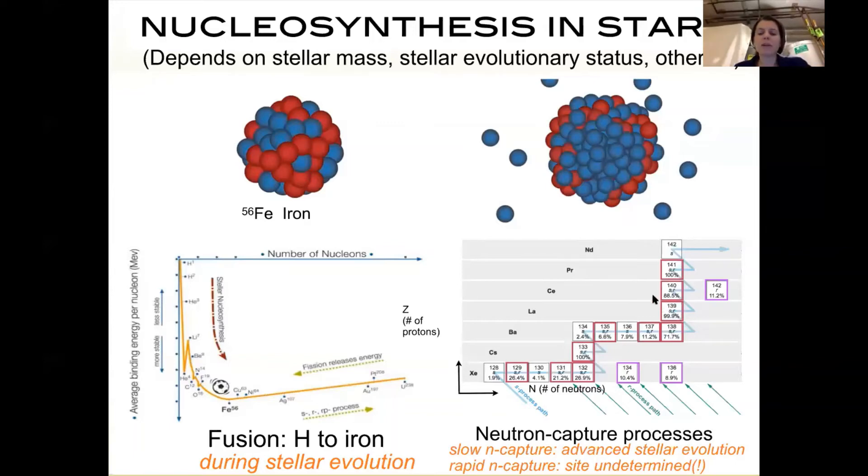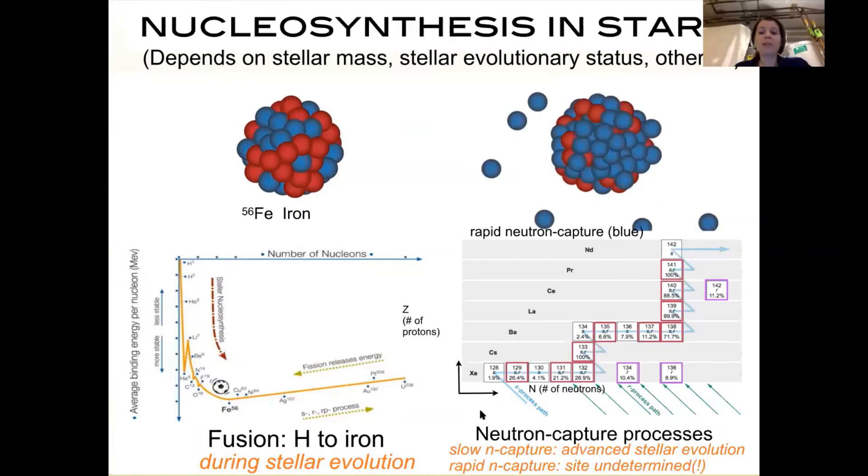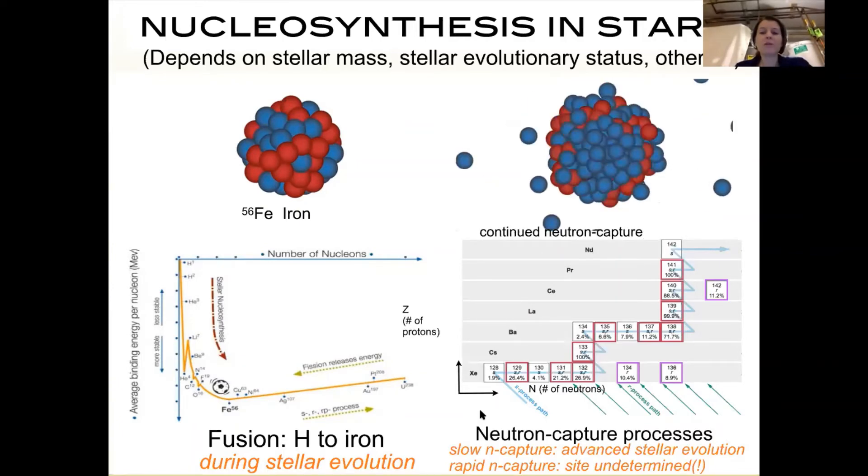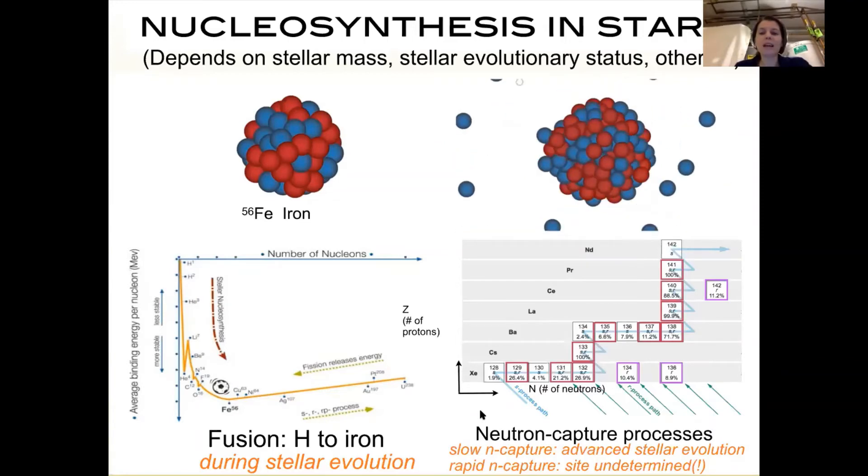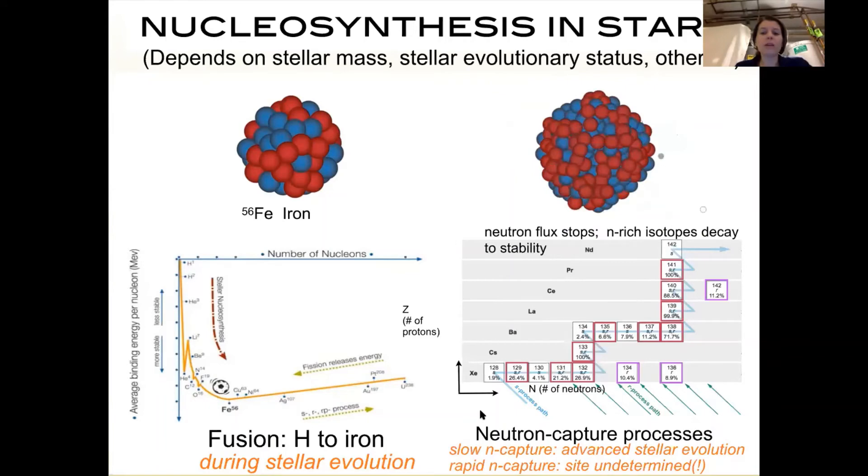The rapid neutron capture process, as the name suggests, is rapid. You take your iron seed nucleus and bombard it with tons of neutrons within the half-life of the beta decays of these isotopes. This nucleus doesn't know what's happening—it gets bombarded with neutrons and swells really bad, as you see in this cartoon. Only when the neutron flux stops does it all decay back to beta stability. This is what we mean by rapid neutron capture process.